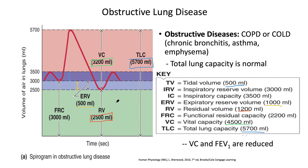Where is the other 800? That other 800 can be seen in the functional residual capacity — the amount of air in the lungs after a normal breath. That number increases by 800, from 2,200 to 3,000. So the numbers that remain the same are total lung capacity and tidal volume. What changes is how much air I can get in and out when using full force, because 1,300 milliliters can never be fully expelled.